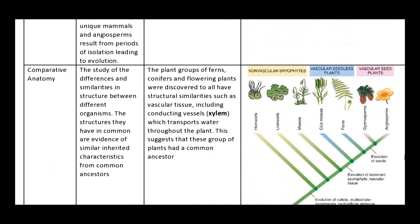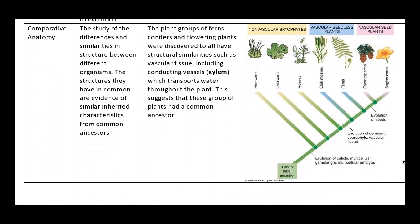Moving on. Comparative anatomy. Comparative anatomy is actually really interesting. It's the study of the differences and similarities between the structure of different organisms. These structures have certain characteristics which are in common. And these inherited characteristics allow us to prove that they're all from a common ancestor. So that's where it links in for evolutionary proof.